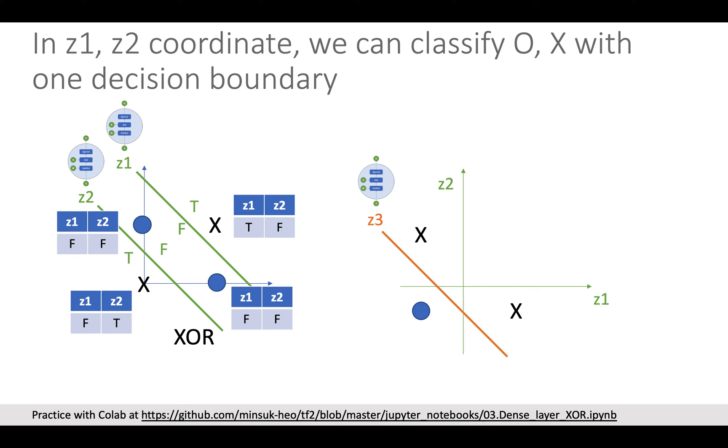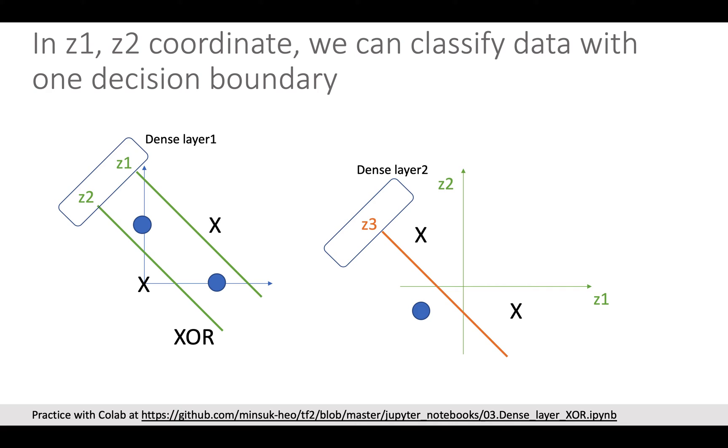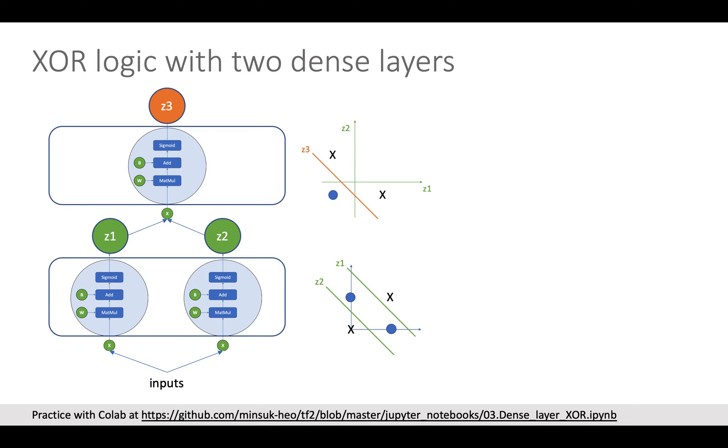Awesome! We will implement it using TensorFlow 2 soon in this video. To sum up, in order to draw two decision boundaries, we need one Dense Layer having two nodes. Then we need one another Dense Layer having just one node to classify data points in first Dense Layer's dimension. I believe you can understand even easier with this picture.